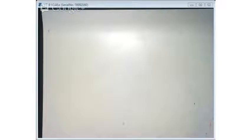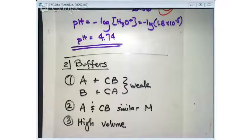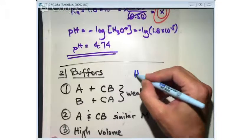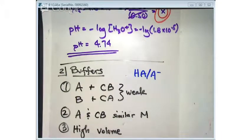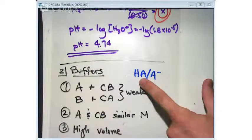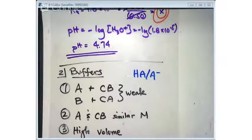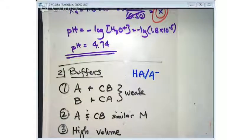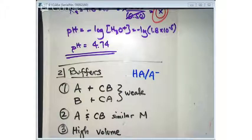Let's go back to buffers now. I want to say one more thing about buffers before we do an example. An example buffer would be HA and A-minus — that would be an acid and its conjugate base. If you try to change the pH of a buffer by adding a base, the acid of the buffer will neutralize that base. If you add acid, the conjugate base will neutralize it. There are two components, so the buffer's going to try to neutralize whatever entity you add.